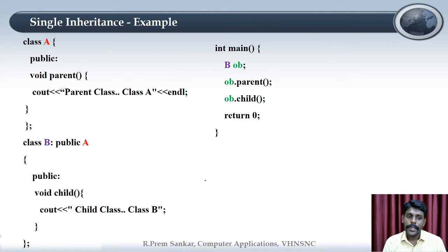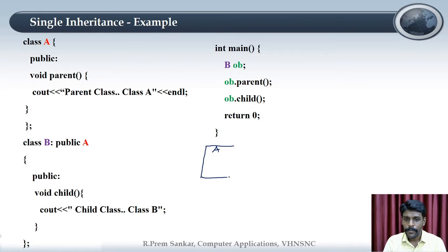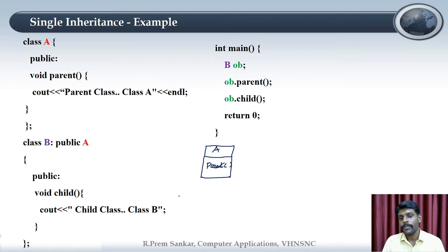So we will talk about the class and use the class. First, we will draw a diagram. So this is a class, and this class has a property — data members and member functions. The member function name is parent, and one member function is in class B.